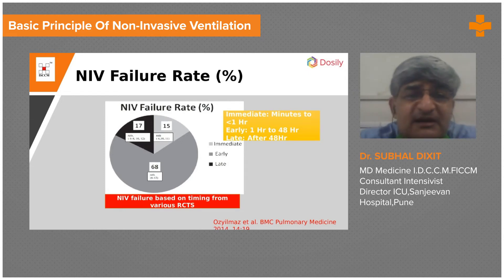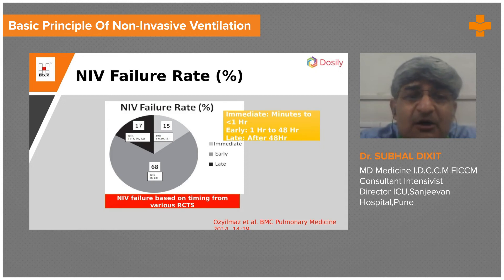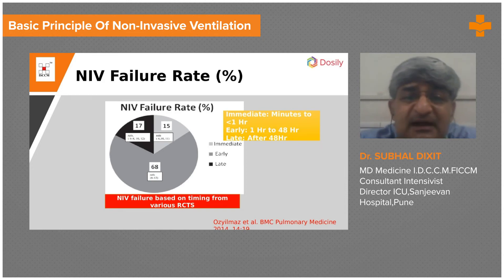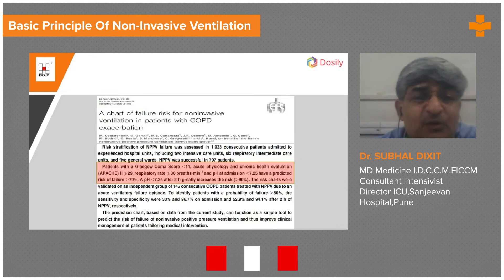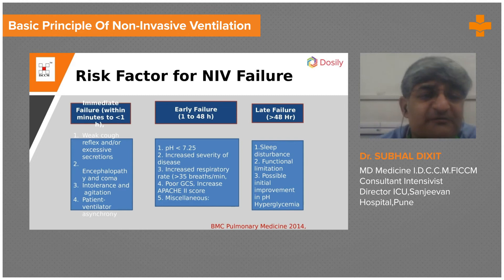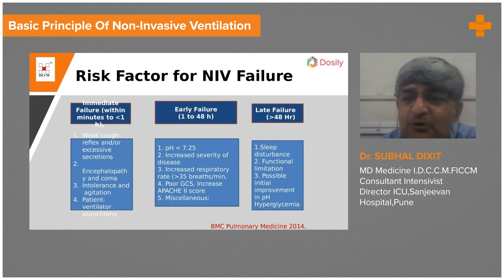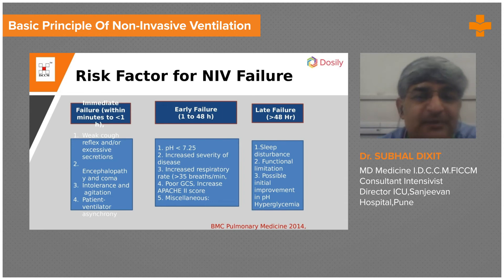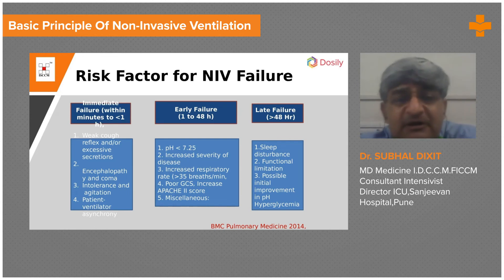India is one of the largest users of non-invasive ventilation in the world, but NIV failure can occur due to improper patient selection. NIV failure is categorized as intermediate (within minutes), early (1 hour to 48 hours), and late (after 48 hours). Intermediate failure occurring within minutes is due to a weak cough reflex, large secretions, aspiration, coma, or encephalopathy. Early failure occurs when monitoring is inadequate, acidosis persists at one hour, or the patient's respiratory rate remains elevated with a high severity score.